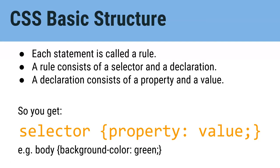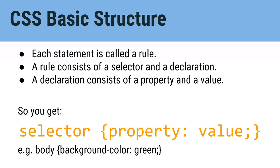So looking at the sheet, we can see the basic structure of a CSS file. Technically a CSS file is a list of rules. Each rule has a selector — the name of the thing you're styling. The selector is usually an element, like p or h1. Then the curly brackets next to the selector hold a bunch of declarations, which are styles you're applying to the item you selected. A declaration has a property and a value. The property is what we're changing about the element, like background-color or font-family. And the value is what we're changing that property to, like blue, green, or sans-serif.